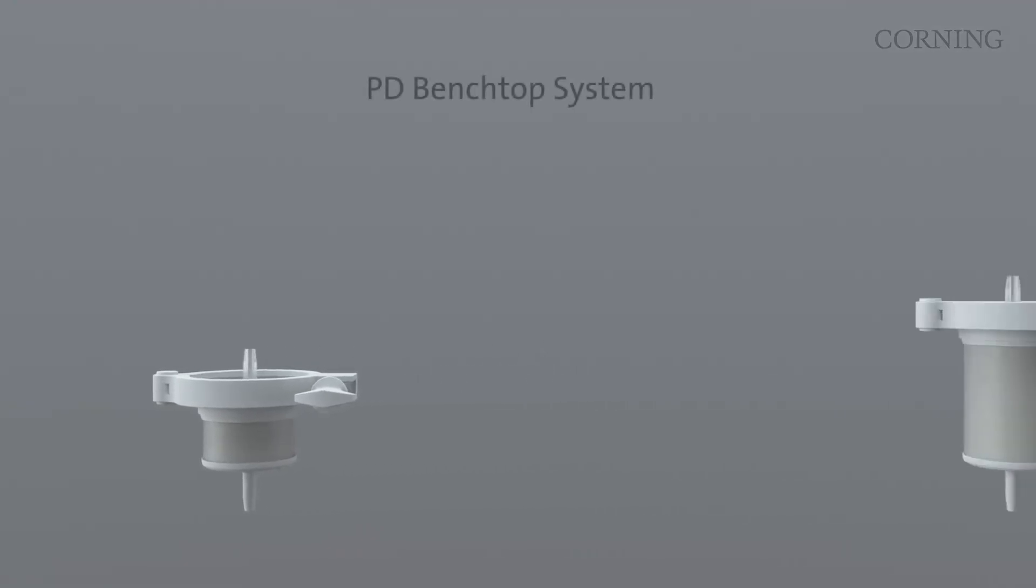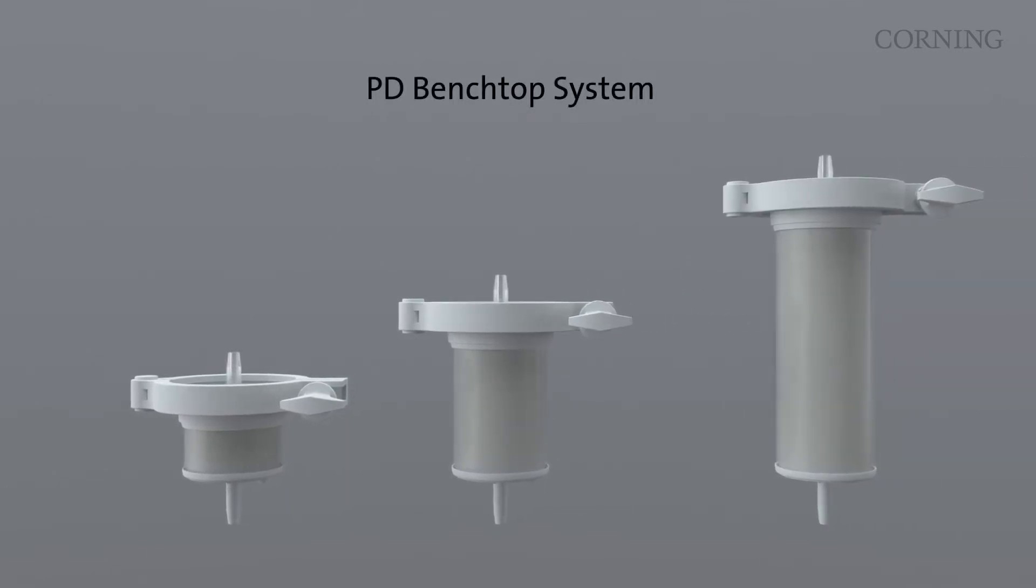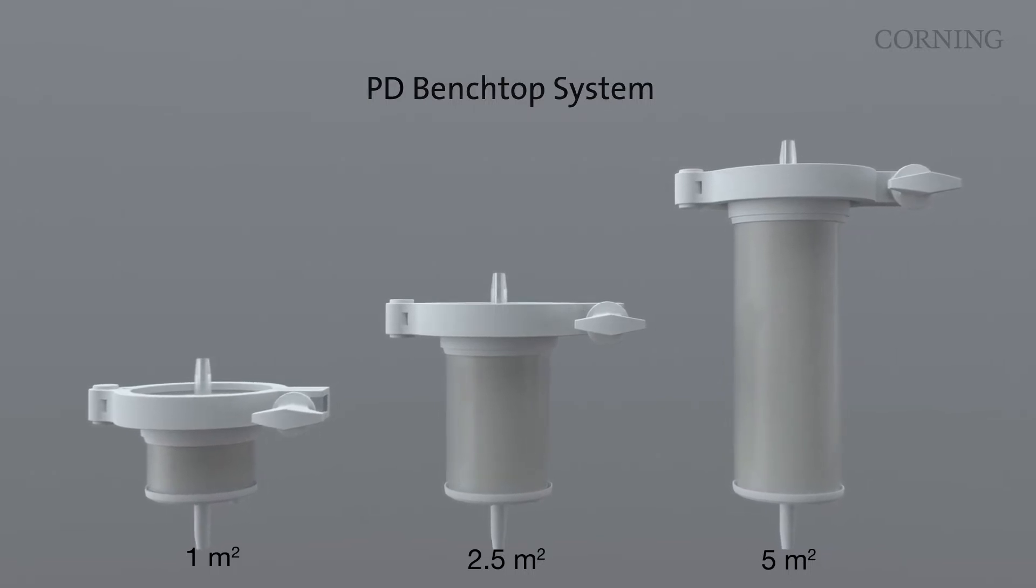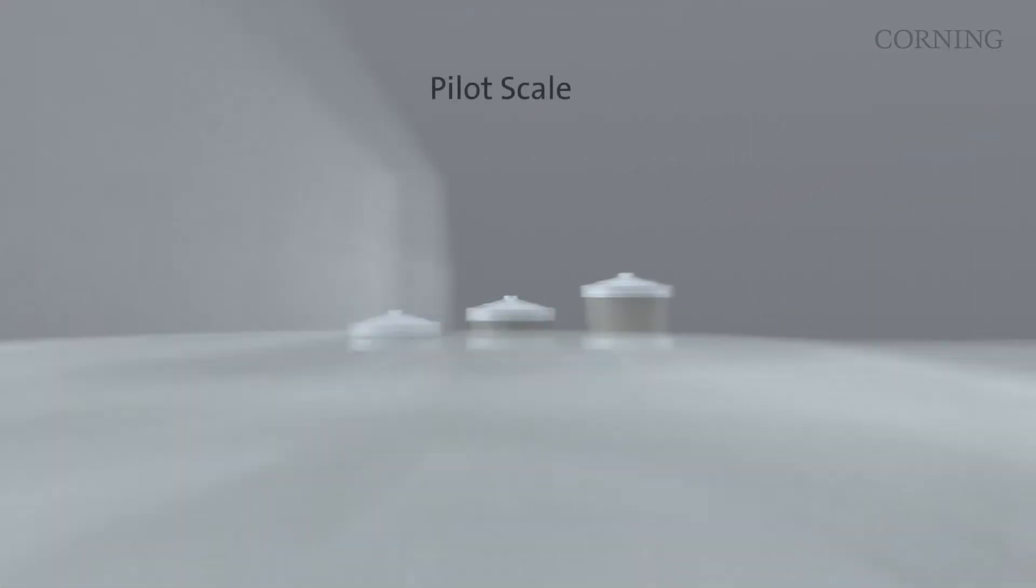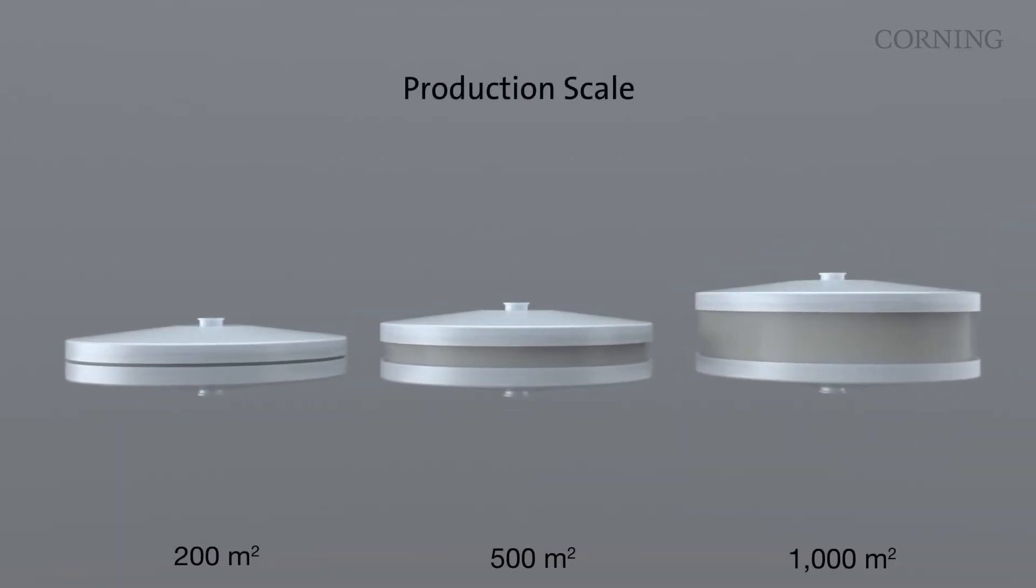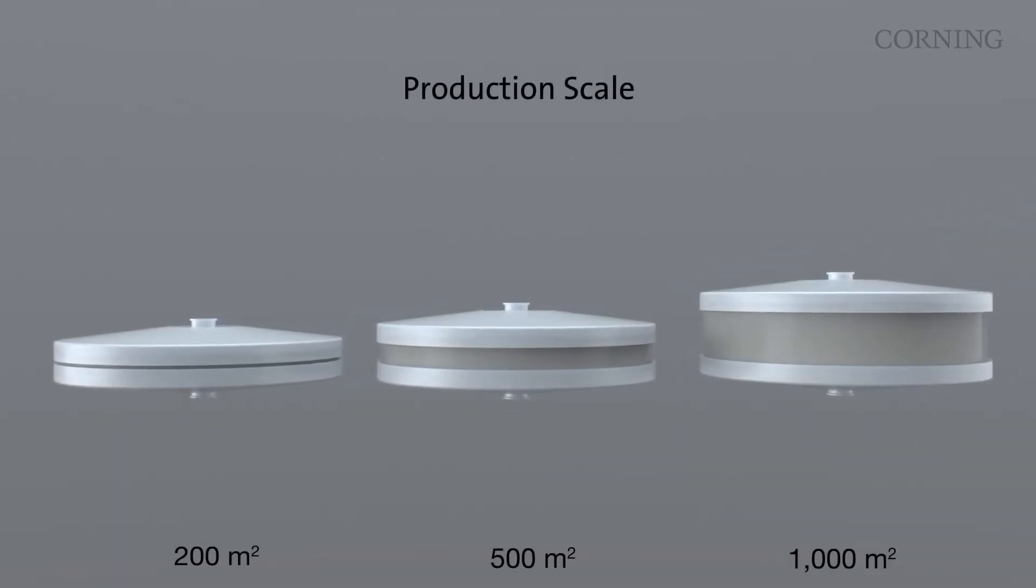The Ascend FBR platform is designed to provide linear scalability with multiple size options from process development to production scale, ultimately enabling users to achieve cell and viral vector yields up to 2 times 10 to the 17th genome copies in a single bioreactor.